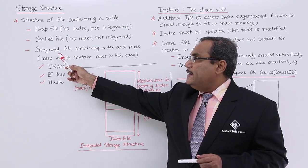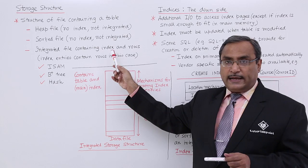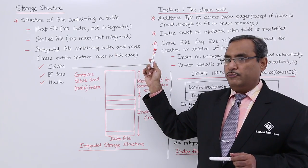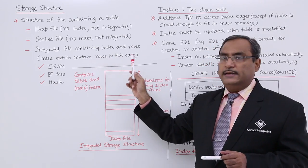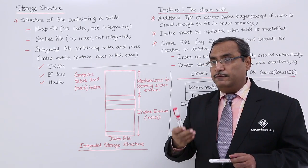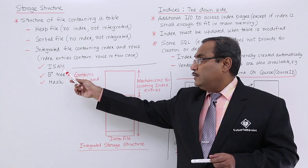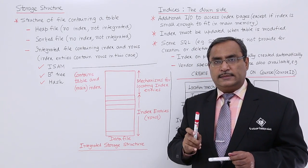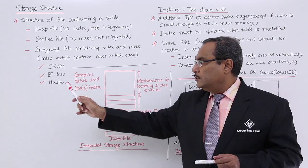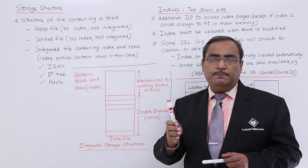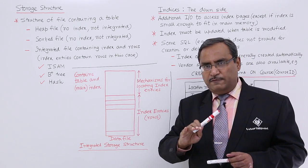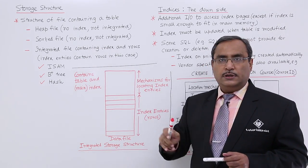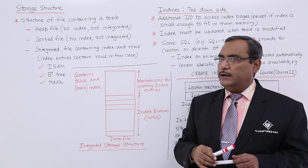We can have the integrated file containing index at the respective rows or records, and these index entries contain rows in this case. It can be of multiple different types like ISAM (Indexed Sequential Access Method), B-plus tree, or hash. We are having separate videos for all these types; you can watch them for a better idea.